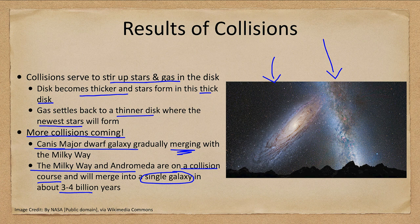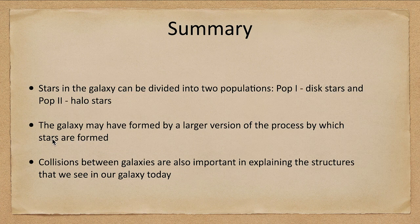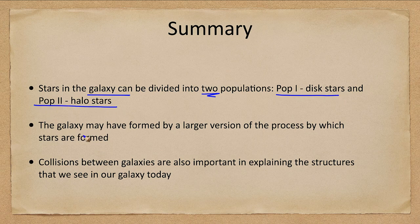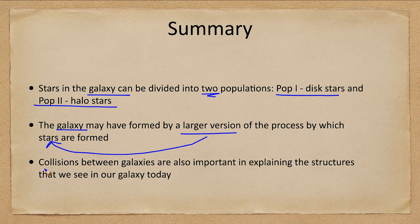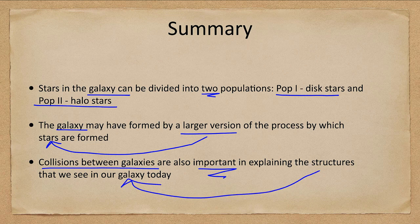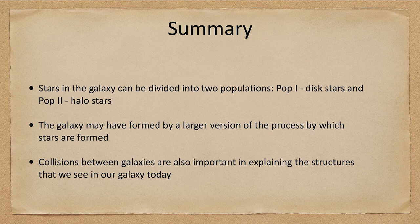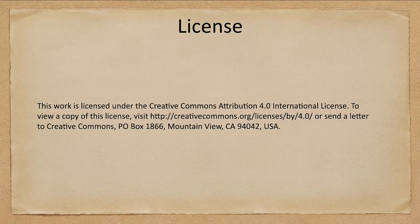We tend to think it's probably a combination of both models — a smaller galaxy forms first and then grows through collisions. To summarize: we can divide the stars in the galaxy into Population I, the disk stars, and Population II, the halo stars. We think the galaxy formed by a larger-scale version of the star formation process, but galaxy collisions are also important in explaining the structures we see today. That concludes this lecture on stellar populations and the formation of the galaxy — until next time, have a great day everyone and I will see you in class.